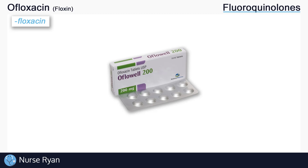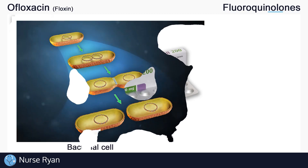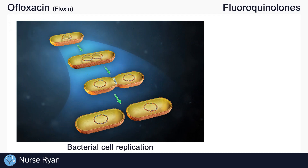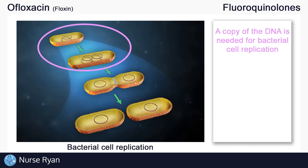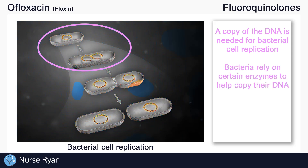Let's go over how fluoroquinolones work to fight against bacteria. In order to survive and thrive in a host like you or me, bacteria need to be able to replicate themselves. Before a bacteria replicates or divides, they first need to make a copy of their DNA, which would then be passed to the replicated cell. In order to copy their DNA, bacteria rely on certain enzymes to help get the job done.